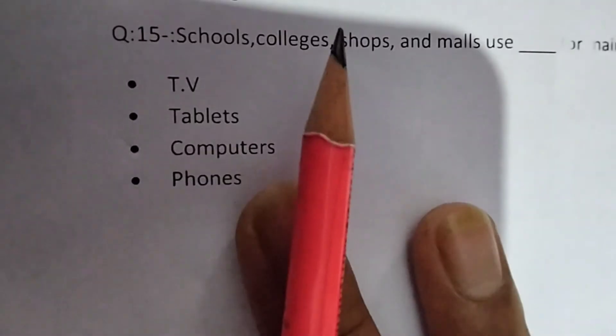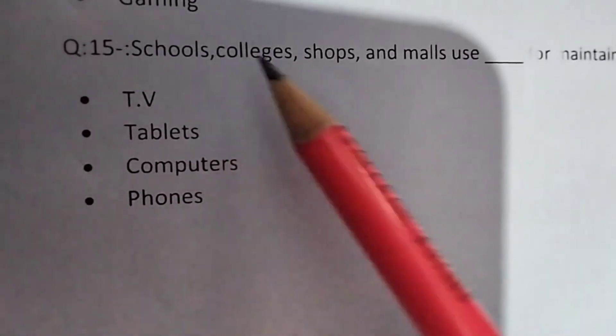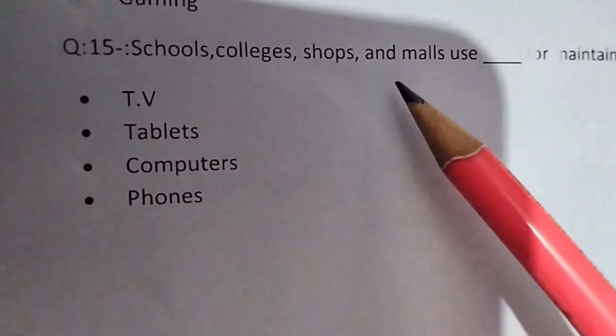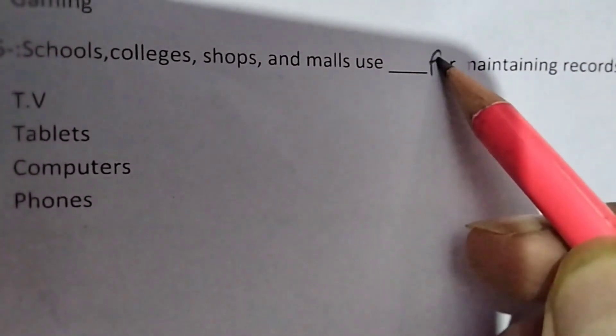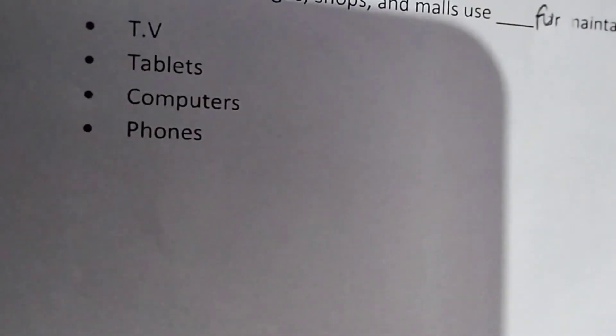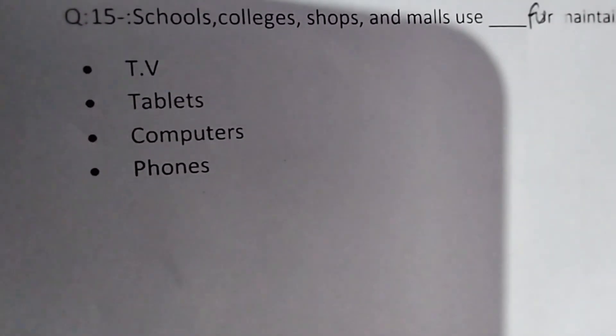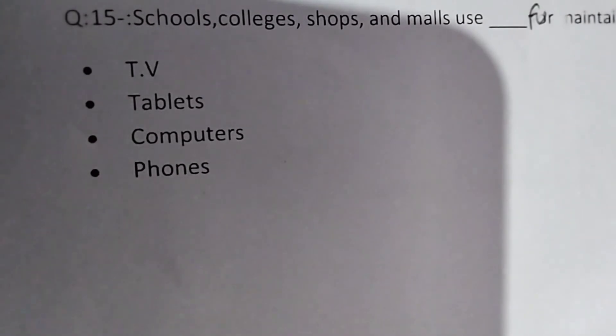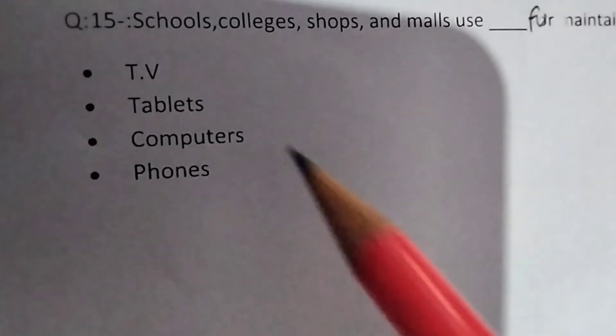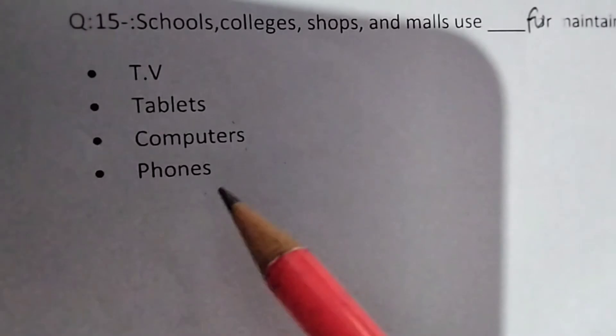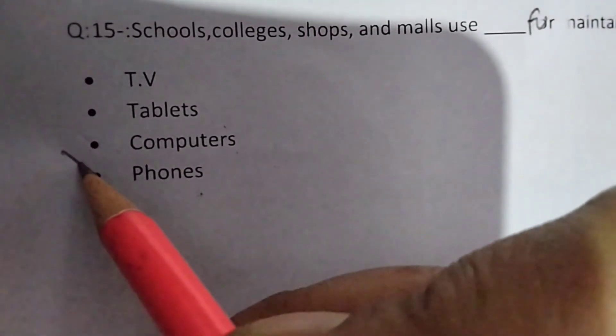Next question is: Schools, colleges, shops and malls use blank for maintaining records. Schools, colleges, shops and malls, what do they use for maintaining records? TV, tablets, computers or phones. What do they use? Computers.